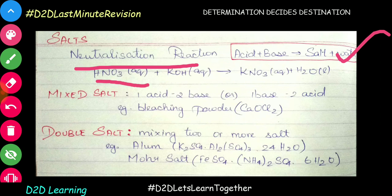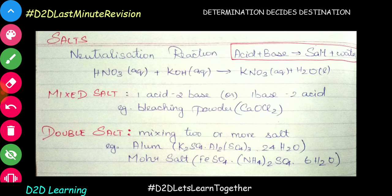For example, HNO3 aqueous solution plus KOH aqueous solution gives KNO3 aqueous solution, which is salt and H2O. Now, a single acid with two bases — or rather, two acids mixed with a single base — that is a mixed salt form. Not that a single base is mixed with a single acid.